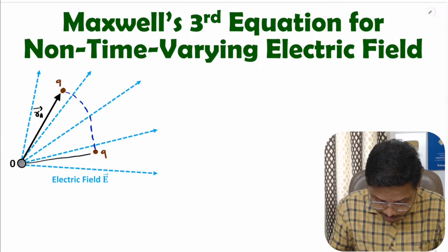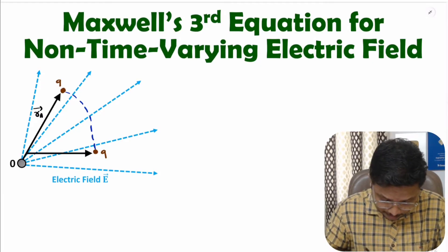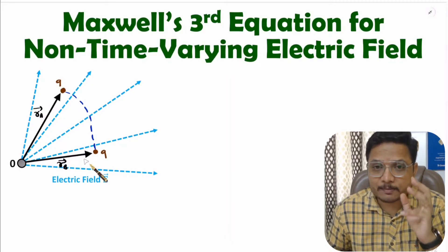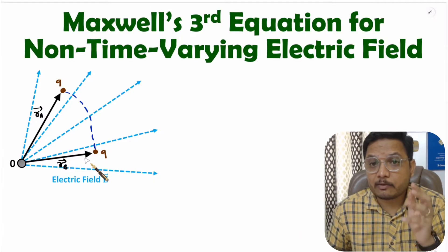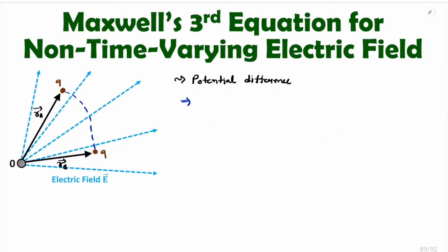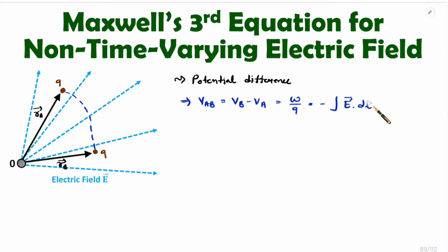Finally, this charge is coming at a location having position vector Rb. In my last video, I explained electric potential and potential difference. What is potential difference? Potential difference is work done per unit charge. So if you want to calculate potential difference, then Vab equals Vb minus Va, and that is minus of the integration of E·dl where the limit of integration ranges from Ra to Rb. So this is potential difference.